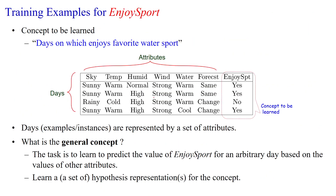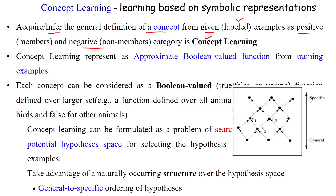For example, this is one training example from the given dataset. The training example is based upon the attribute values: sunny, warm, normal, strong, warm, same — and this is given as yes. Yes means a positive training example. At the same time, no means it is called a negative training example, which we will see later.